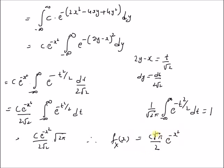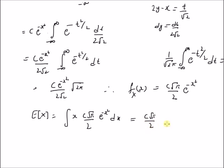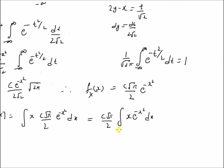This is the marginal PDF of x. Now the expectation of x is the integral of x times c√(π/2) times e^(-x²) dx, with limits from minus infinity to plus infinity. We can clearly see that this is an odd function, so the integration from minus infinity to plus infinity equals zero. Therefore, expectation of x is equal to 0.